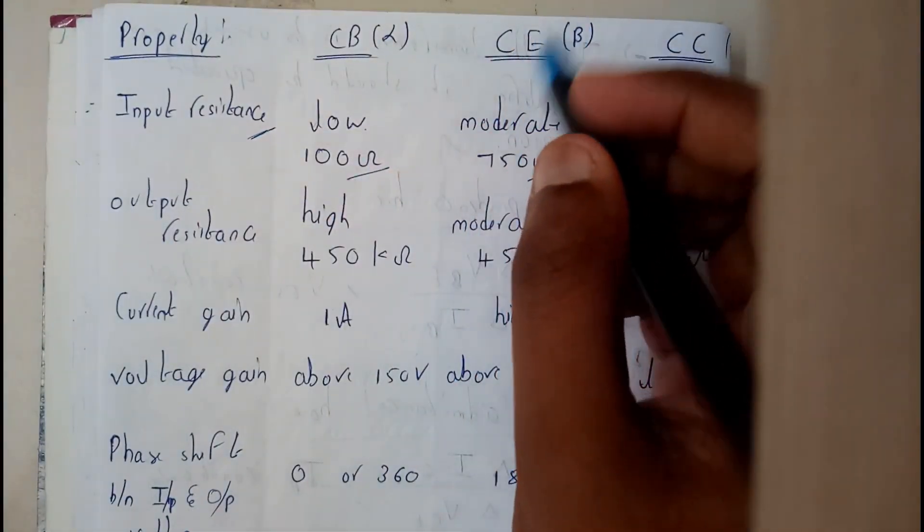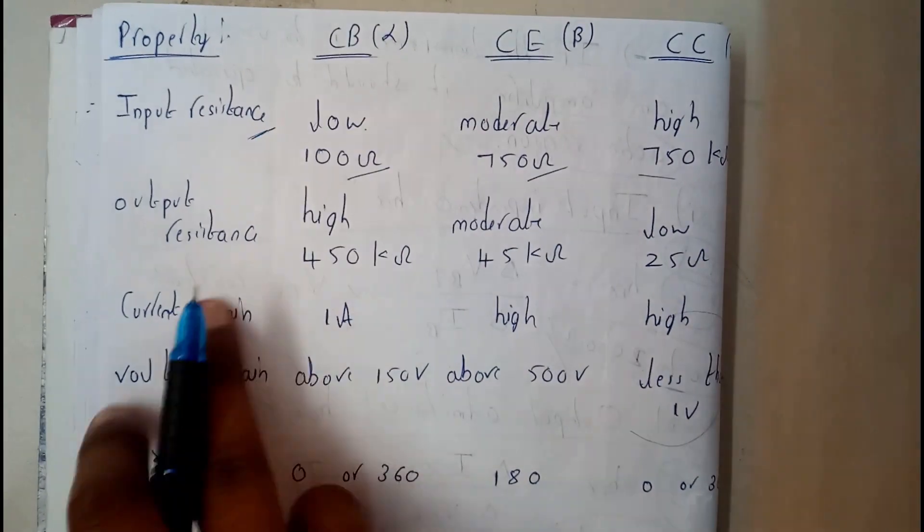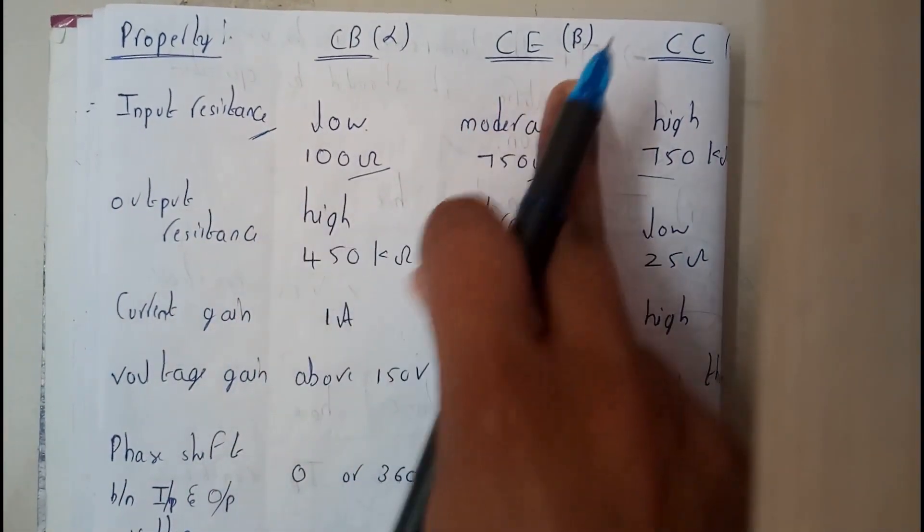And the large signal gains are alpha, beta, gamma. So output high, moderate, low. So it's pretty reciprocal.